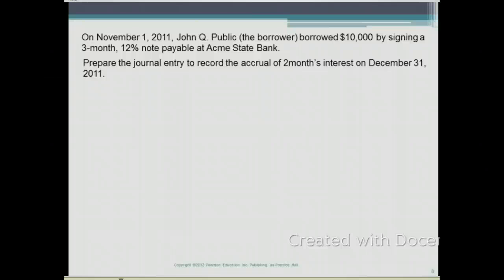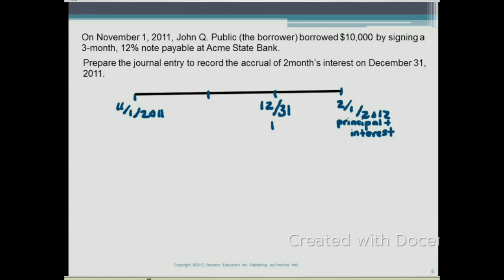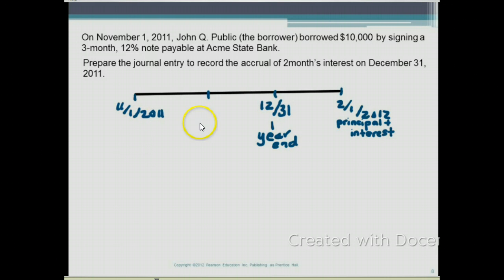Let's look at a timeline. We borrowed the money on November 1, 2011, and we're going to pay it back on February 1, 2012 — three months later. At the end of the three months, we pay back our principal plus any interest. Something else happens in the middle of the note term: December 31 is the accounting year-end. This means on December 31 we need to prepare adjusting entries, an adjusted trial balance, financial statements, and close our books. So at year-end, we must measure all expenses incurred during the period. Between November 1 and December 31, we have two months of interest expense to accrue.